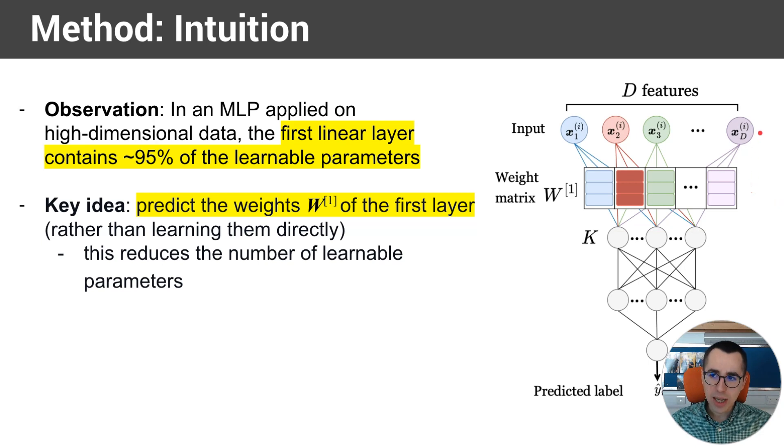So let's consider a case where the input is 5,000-dimensional and the hidden layer size is 100. Then the first layer will be 5,000 times 100 weights, and then the following layer will be 100 times 100 weights. In that case, the first layer has 50 times more learnable parameters than the next layers, which implies that essentially 95%, 97%, 98% of the parameters are in the first layer. And the key observation, the key idea of our method is that rather than learning those parameters, we want to predict those parameters, so we don't directly learn them, but instead we predict them.